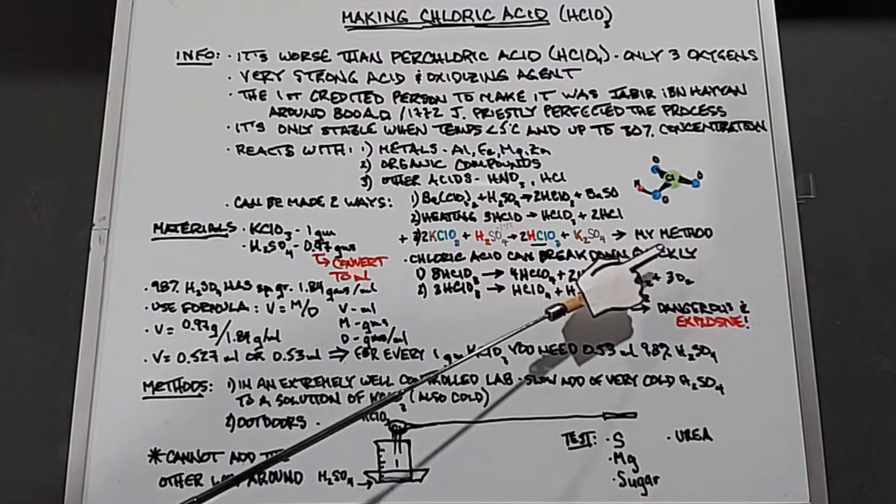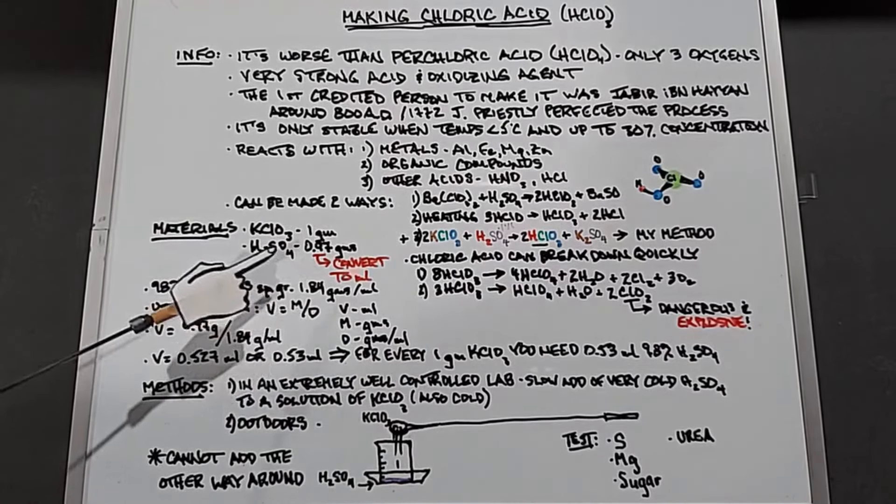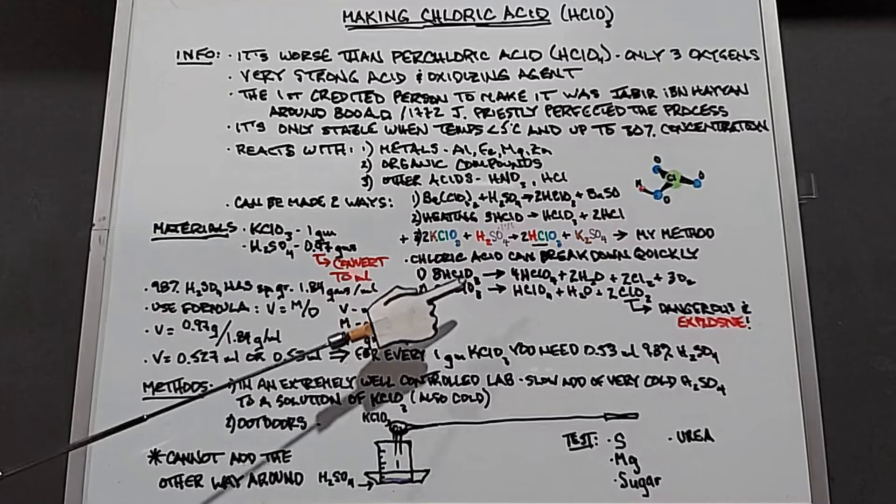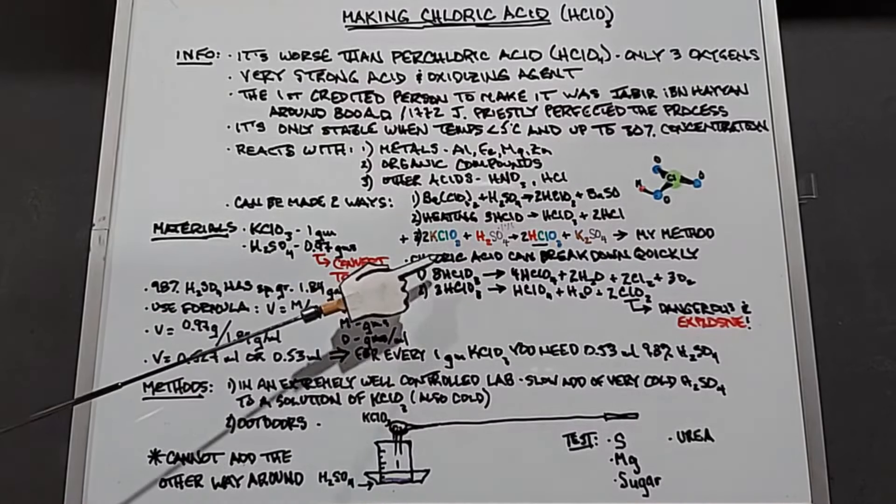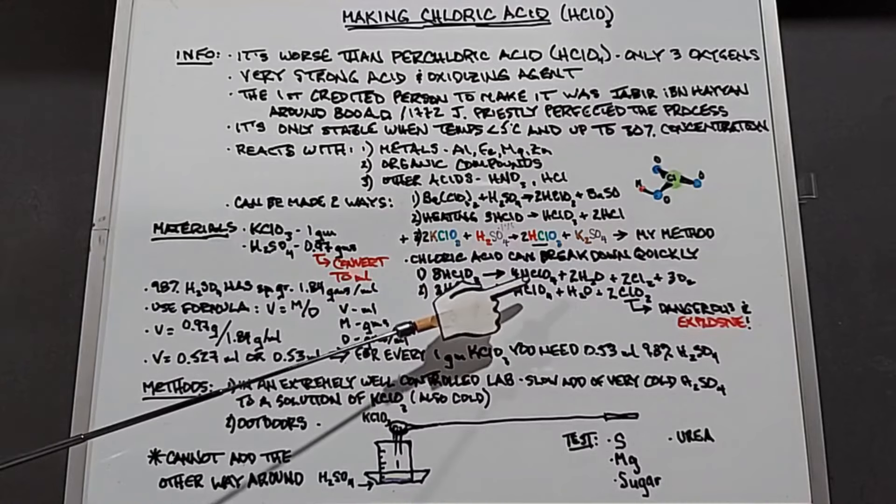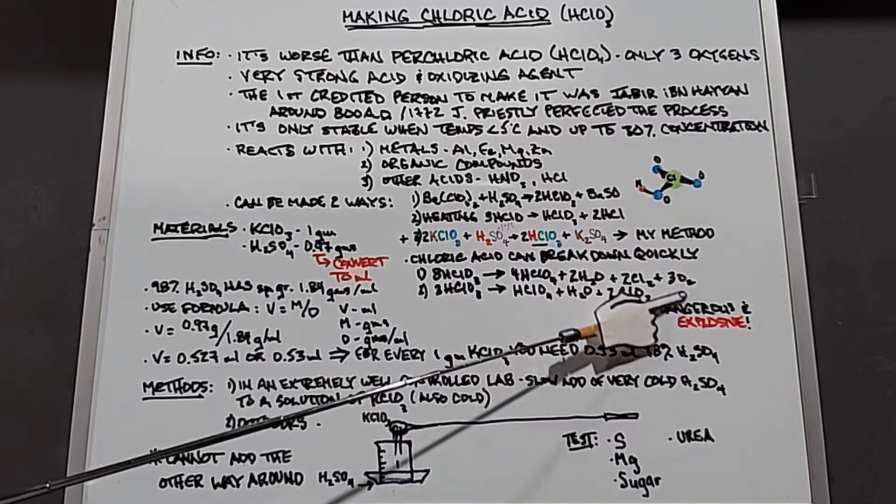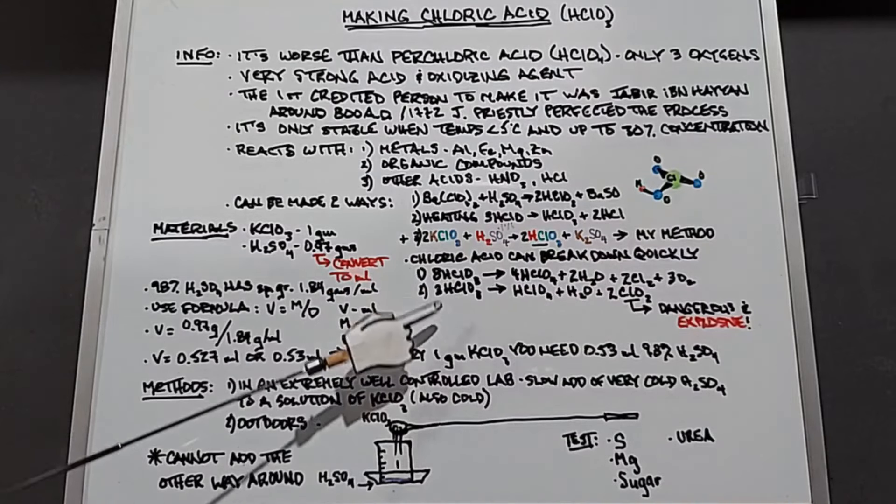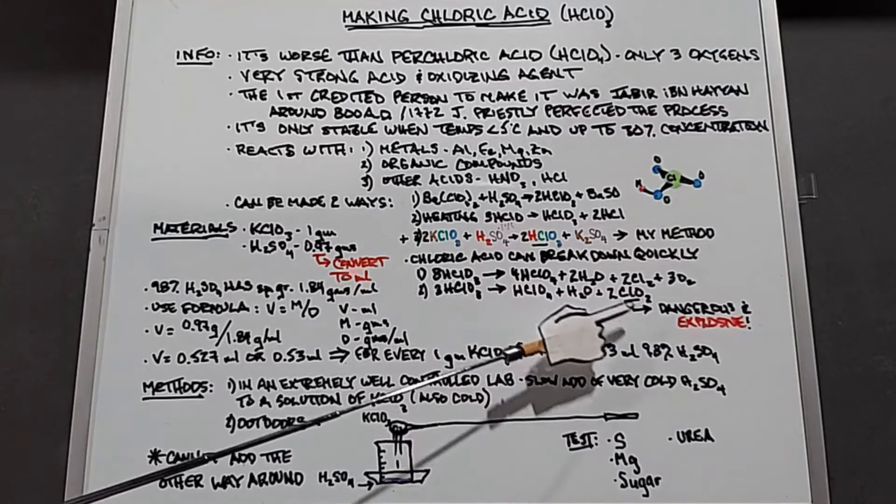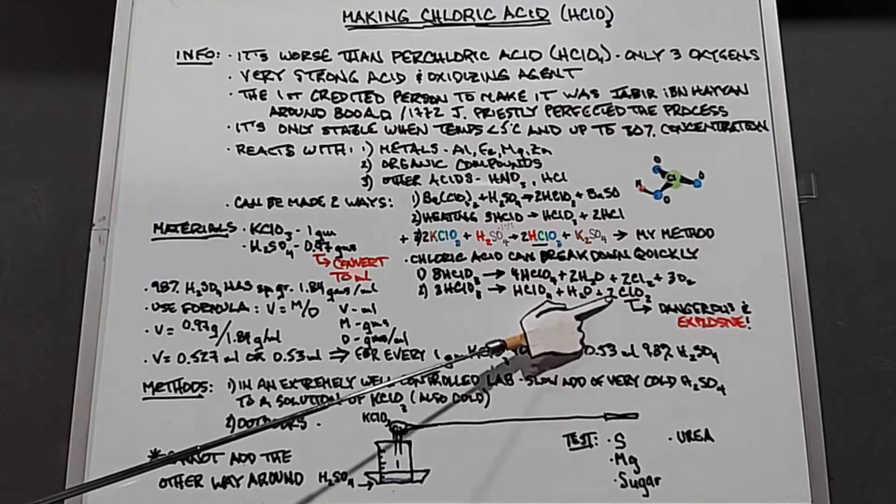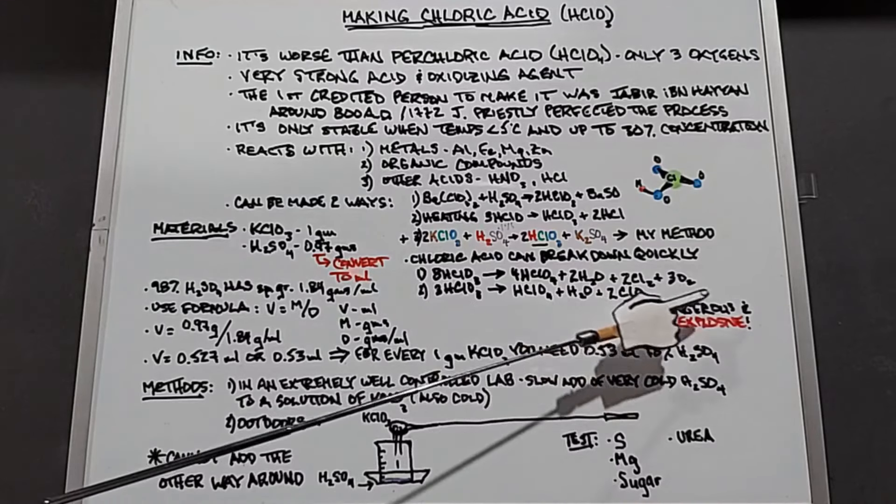Because the reaction is so exothermic, the chloric acid often breaks down. The first method is eight chloric acids break down into four perchloric acids plus two waters plus two chlorine gas plus three O2 gas. The second is three chloric acids break down into one perchloric acid plus water plus two ClO2. This is chlorine dioxide, nasty stuff.